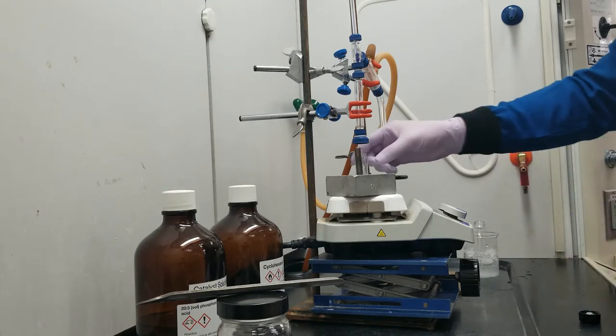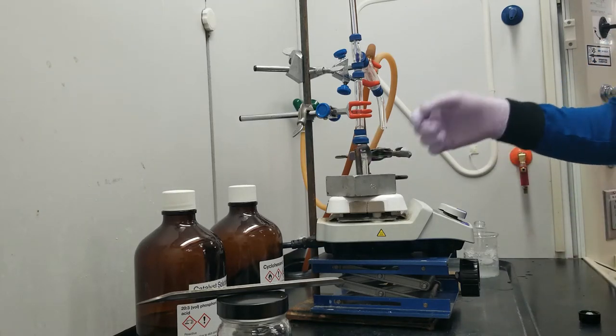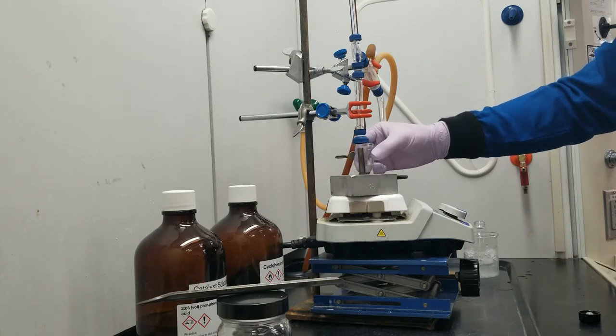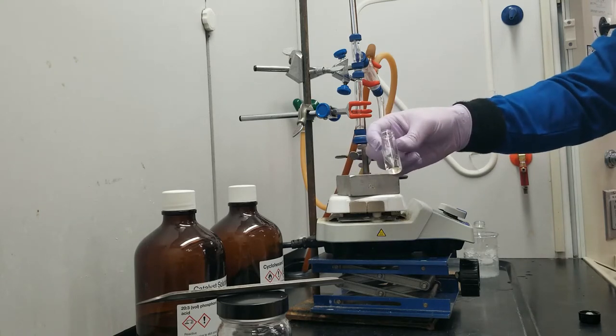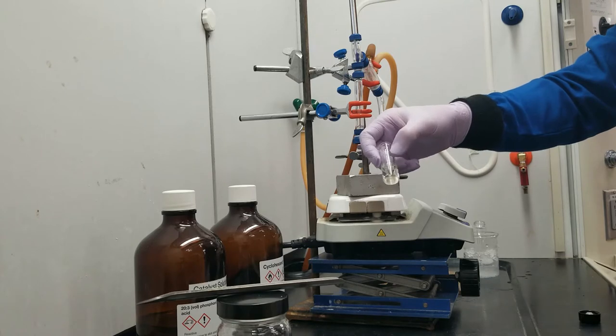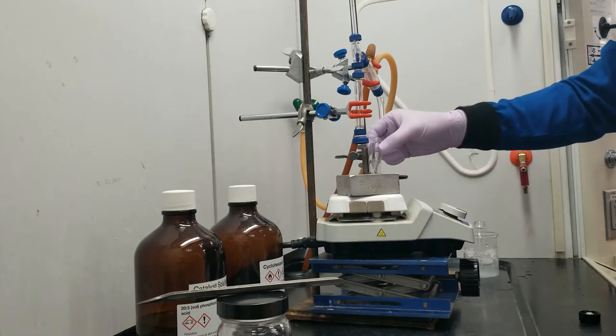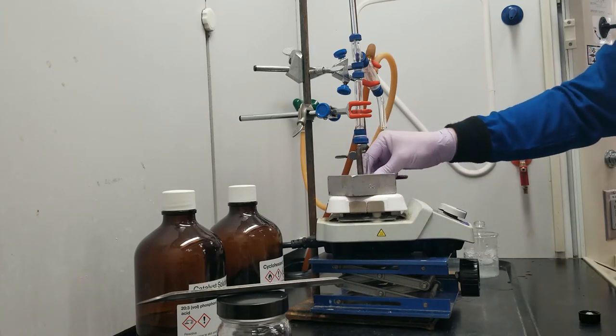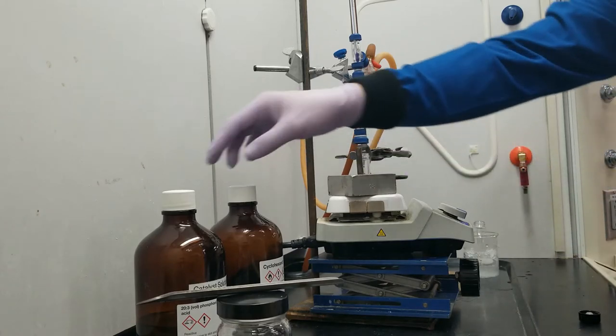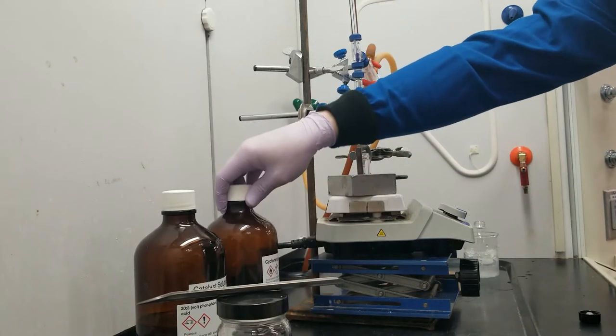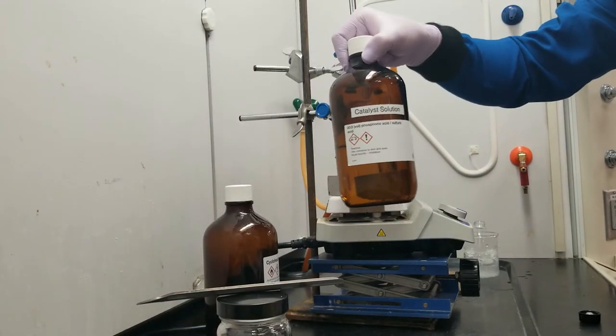So it's going to be on a much smaller scale, so we're using smaller equipment. Our reaction vial is going to be a 5 milliliter micro vial like this, and that's where we are going to heat our cyclohexanol and our acid catalyst solution.